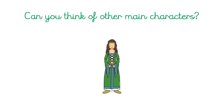In the story the main character is a princess, but what other characters could we have? This is where it works much better when you guys are shouting out names to me. We could have, instead of a princess, a girl or a boy — we could use our friends' names.